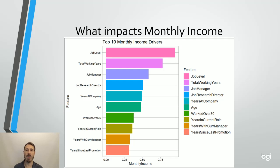So what impacts monthly income? Job level, total working years, what your job is. So you can see there's a couple of jobs there, manager or the research director. Those are binary values that I encoded to help performance in the KNN and the Naive Bayes models.